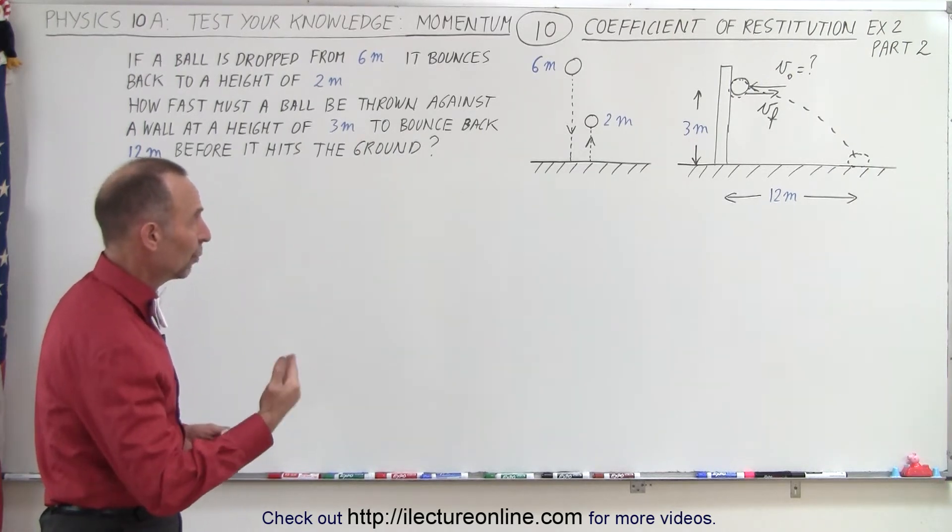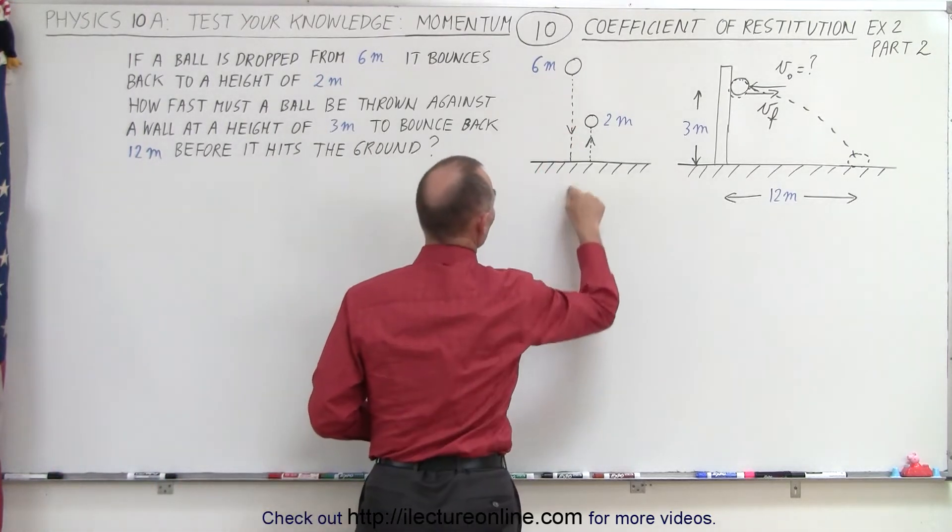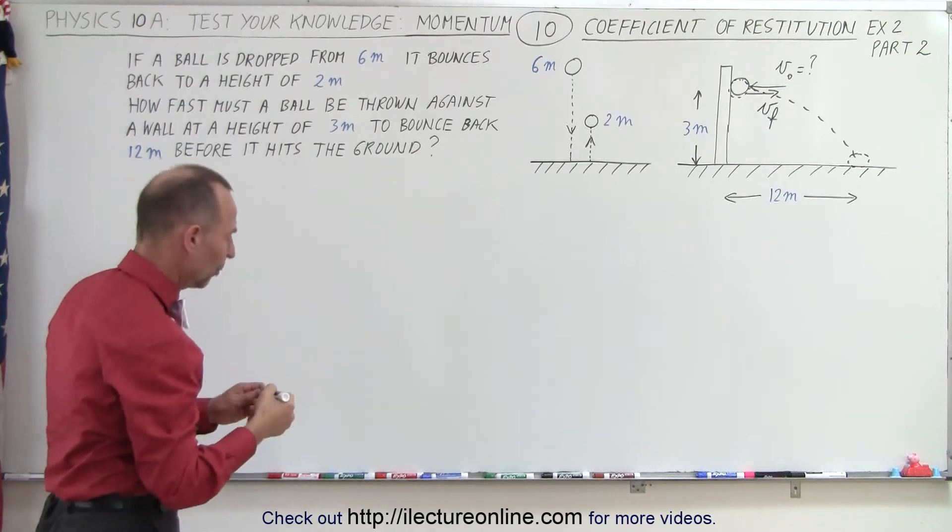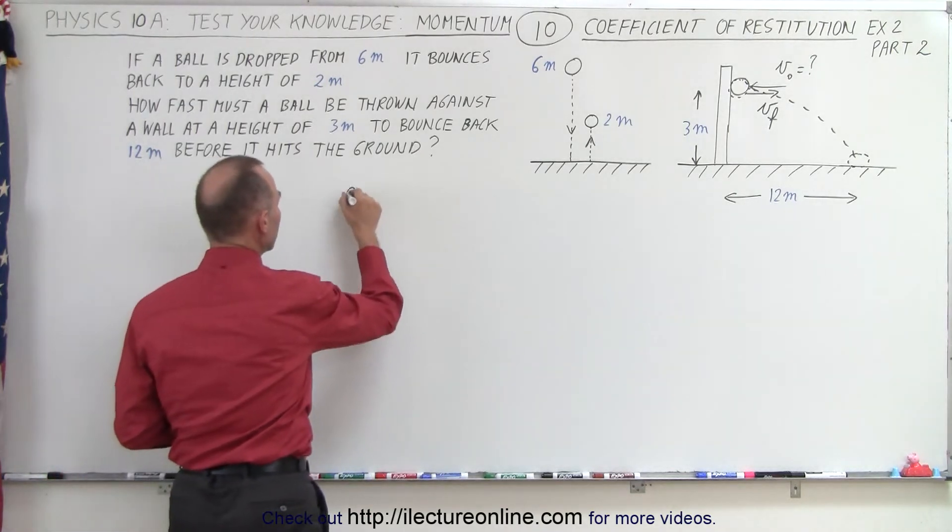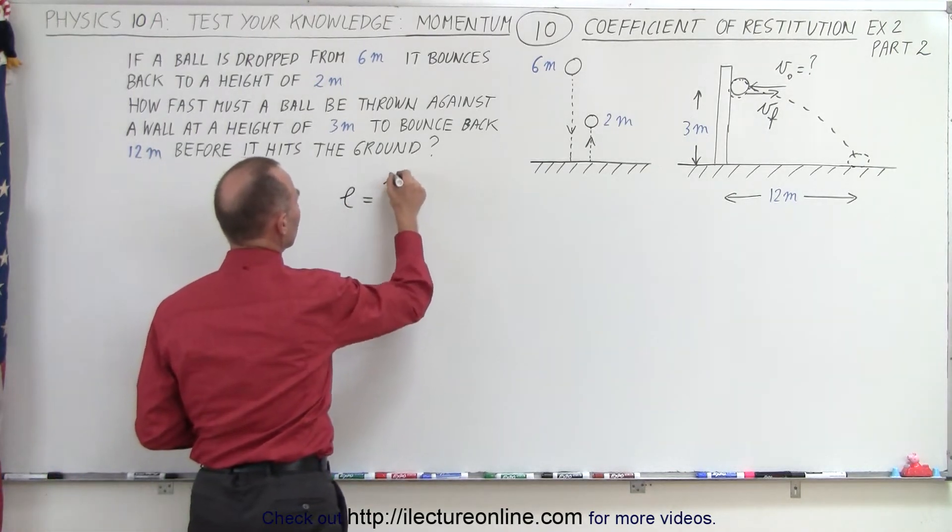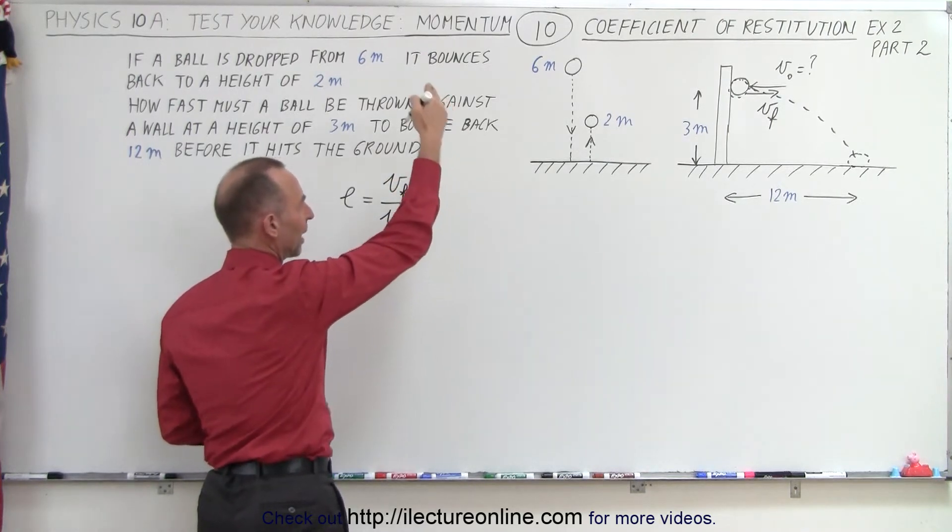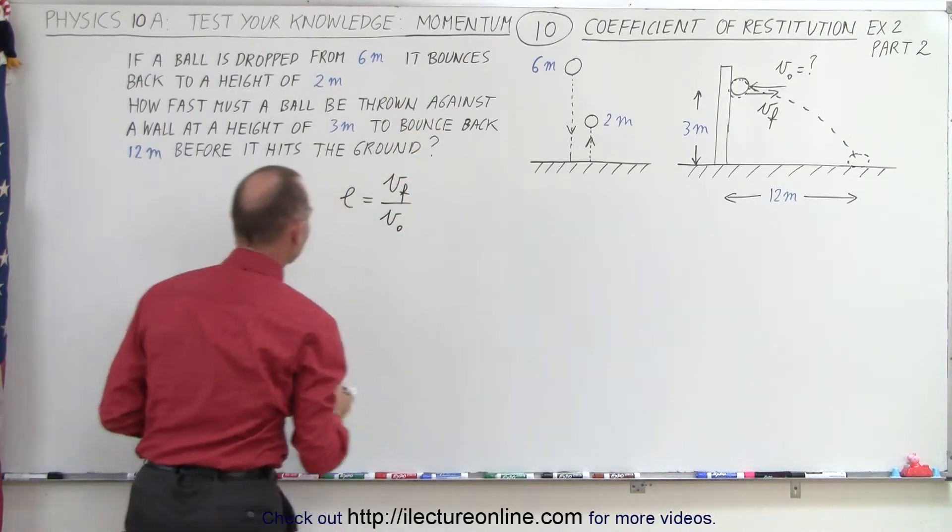First of all, we're told that the ball was dropped from 6 meters and it bounces back 2 meters. So from that, we should be able to calculate the coefficient of restitution. So E, by definition, is equal to the final velocity divided by the initial velocity, the final velocity going back up and the initial velocity coming back down.